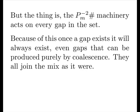But the thing is, the second minor primordial machinery acts on every gap in the set, not just twins and cousins. Because of this, once a gap exists, it will always exist, even gaps that are produced purely by coalescence.